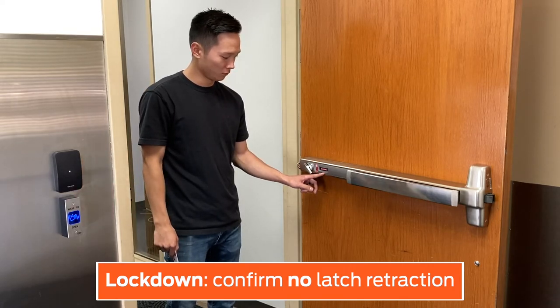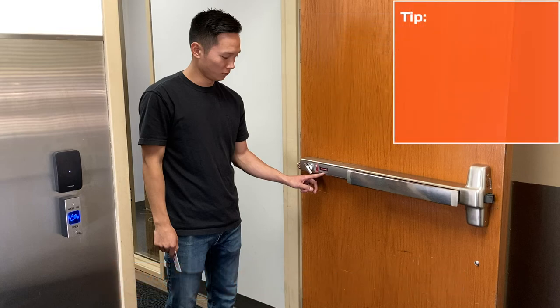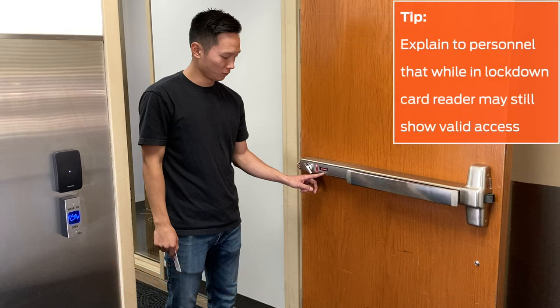Check your access control system software to confirm the lockdown status change has been reported. To help facility personnel, you may wish to explain that while the ESL is in lockdown, the card reader may still show a valid access even though the latch does not retract. ESL only switches off the QEL. Other components around the door are not affected.